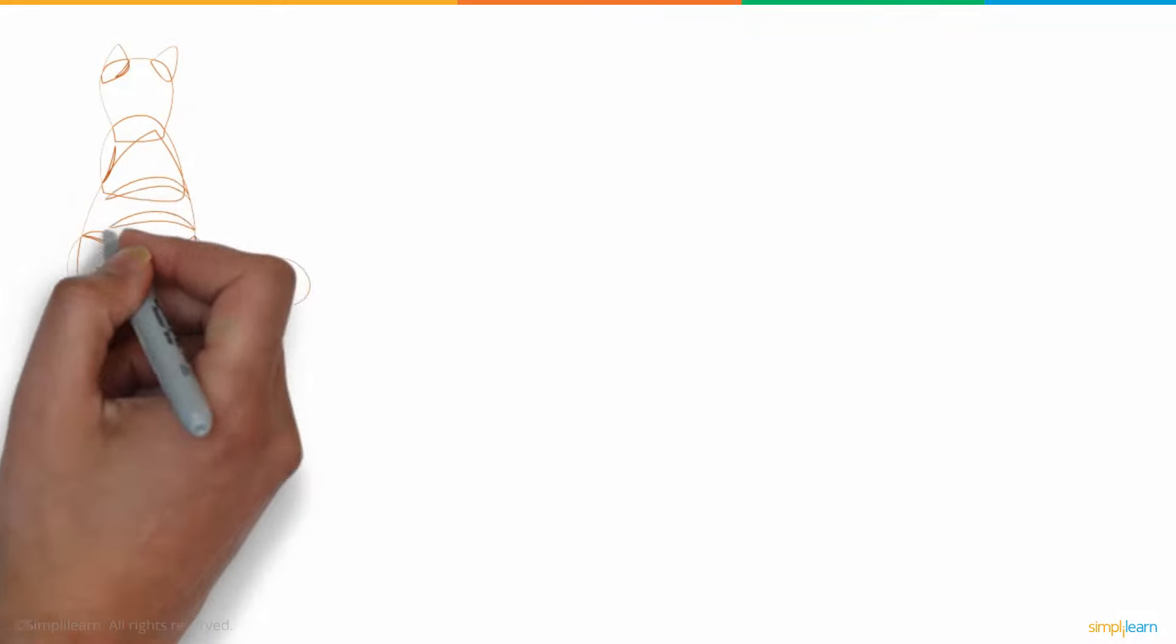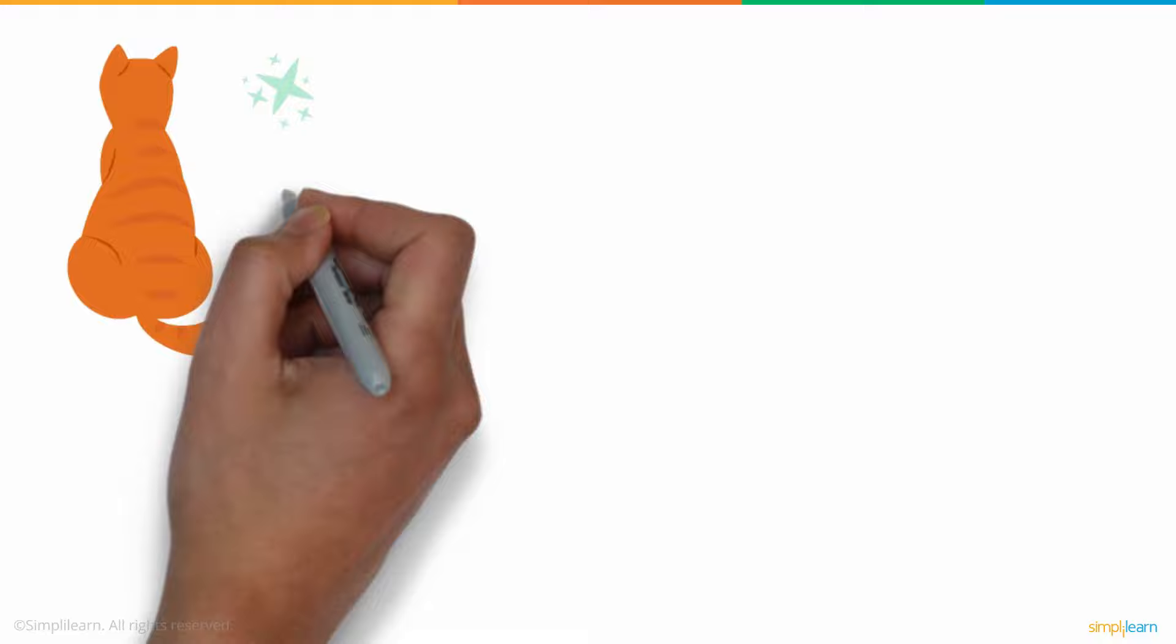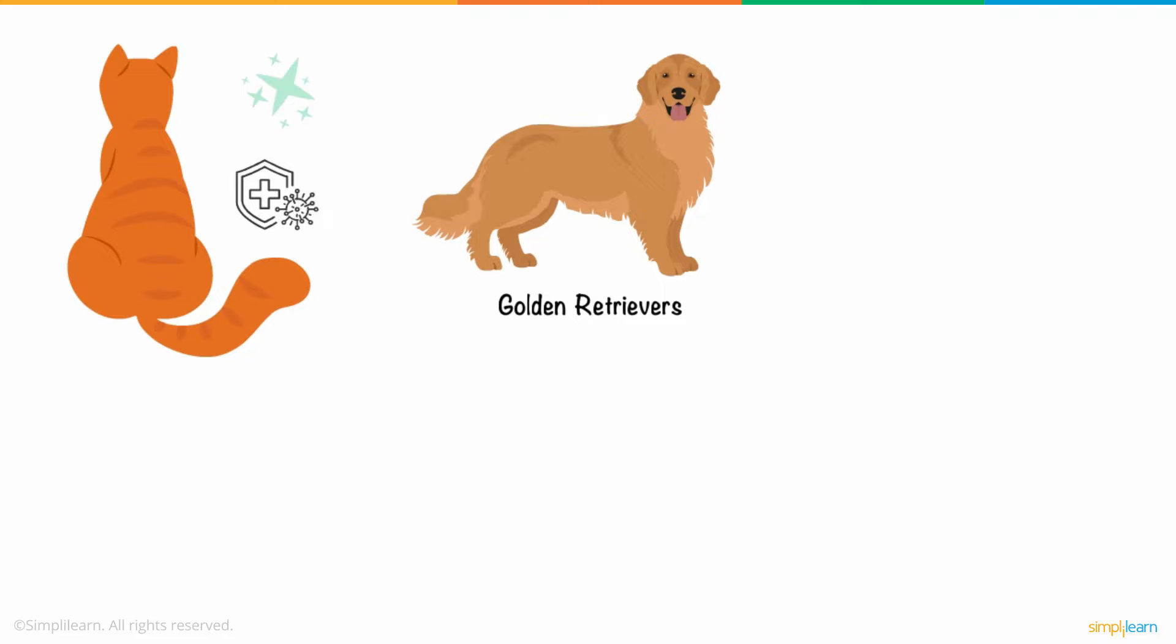You must have seen some breeds of household animals having especially shinier fur or strong immunity to certain diseases. You must have heard that golden retrievers are one of the most loyal and human-friendly dogs, whereas Samoyeds are the ones that have one of the best furs.